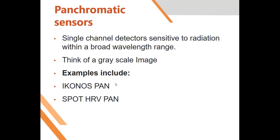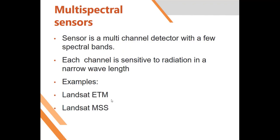When dealing with optical remote sensing, we have panchromatic sensors — these are sensors that are sensitive to radiation within a given band, but this band can be broad. Think of a sensor that records imagery within one single broad band. Examples include IKONOS Panchromatic and SPOT HRV Panchromatic.